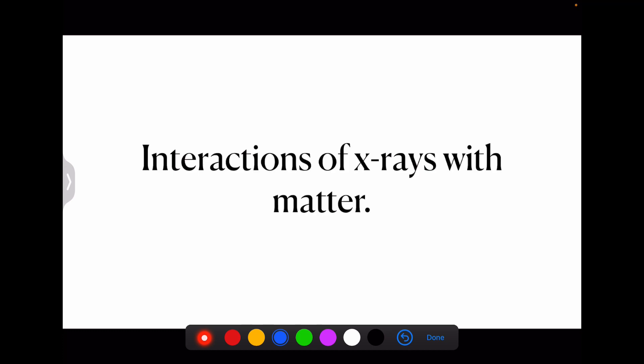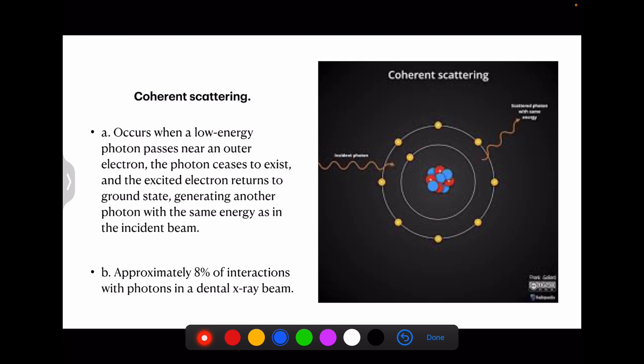Then coming to the interaction of these x-rays with matter. Basically there are three types of scatterings which occur. One is coherent scattering. In this, what happens is when a low energy photon passes near an outer electron, the photon ceases to exist and the excited electron - for example, over here - exits out generating another photon with the same energy at the incident beam. So by this activity, this interaction is about 8%.